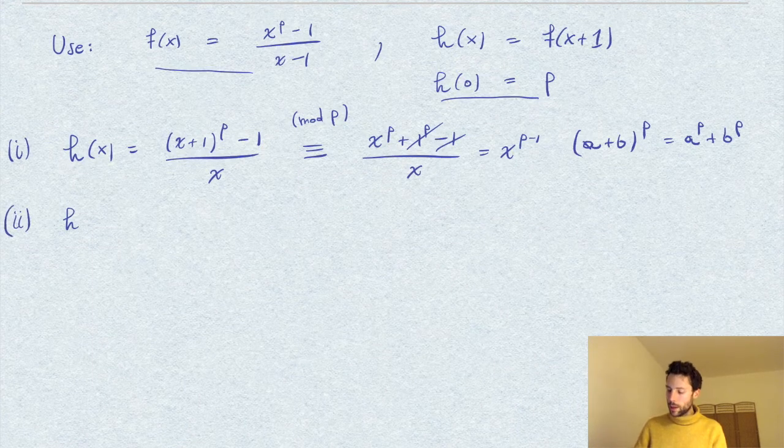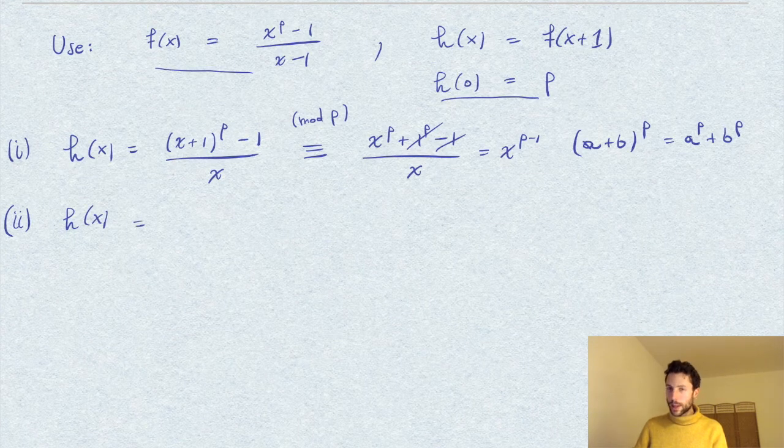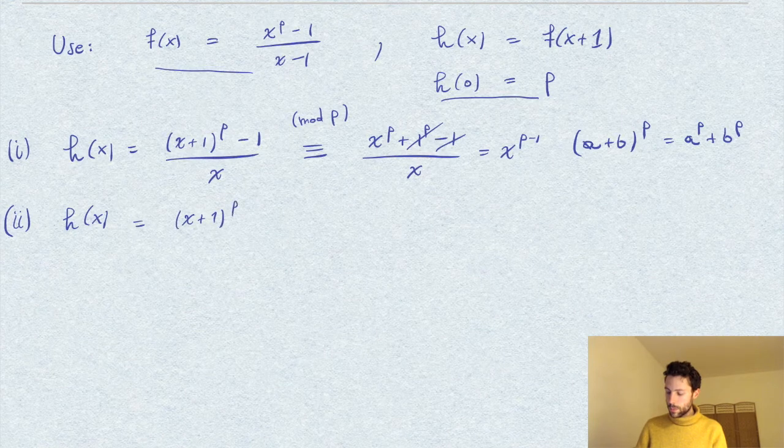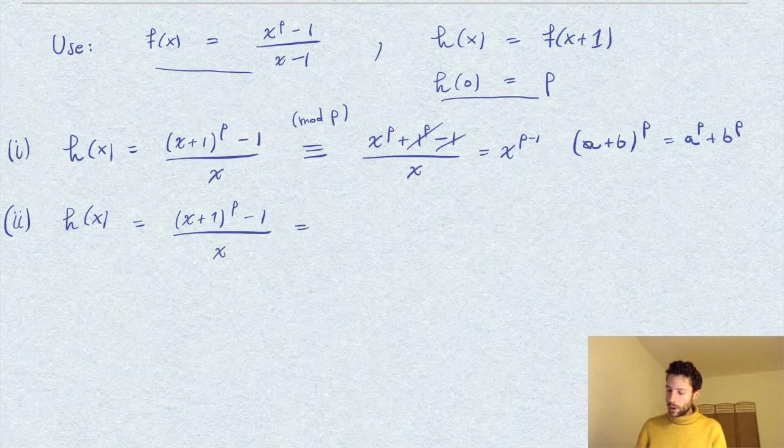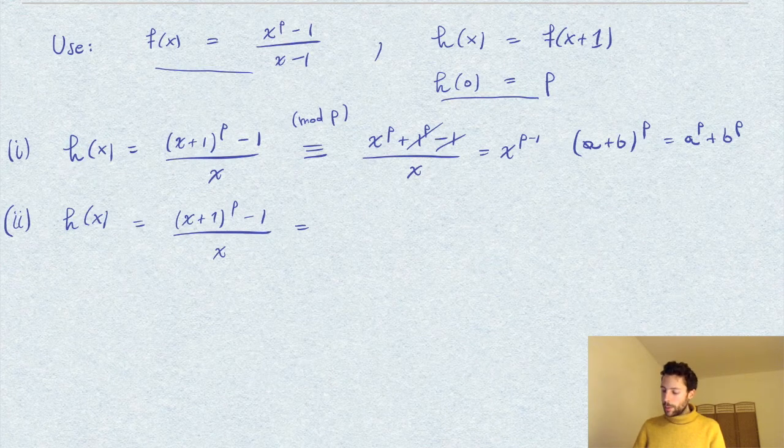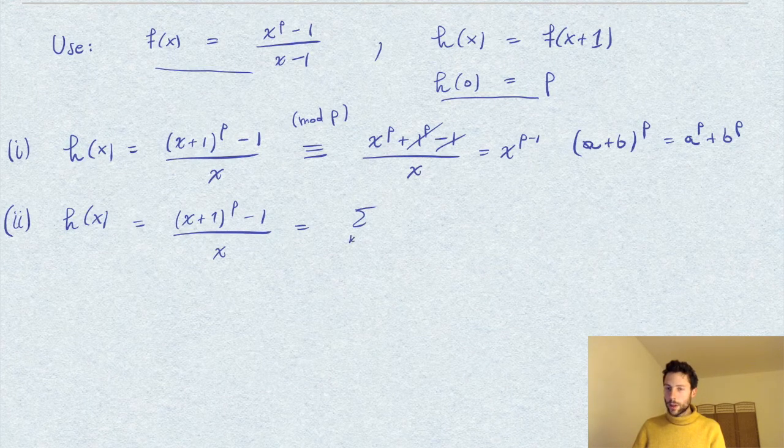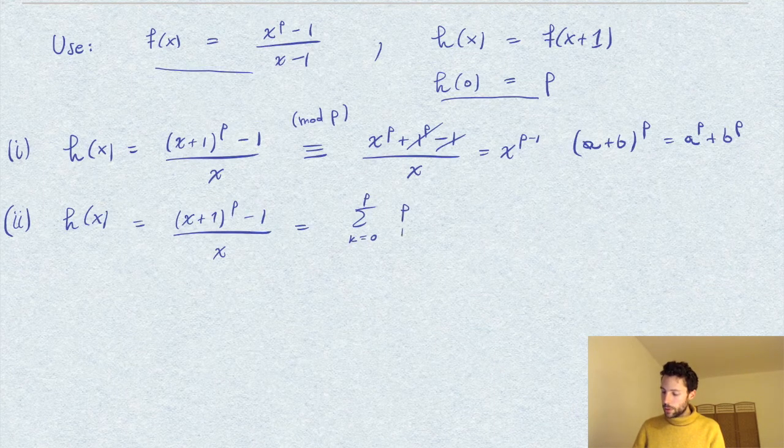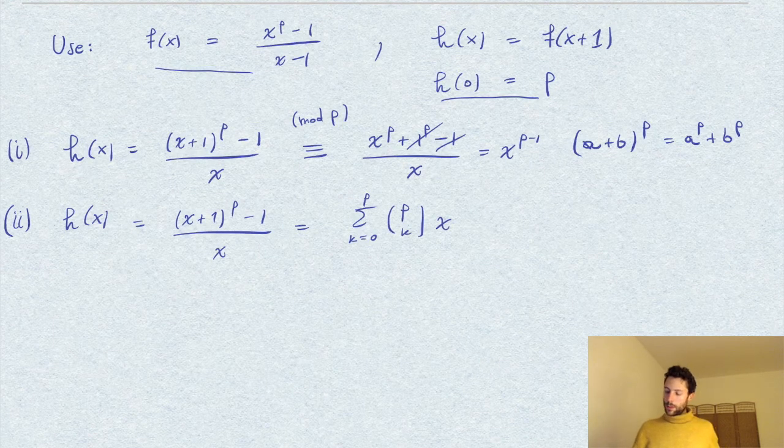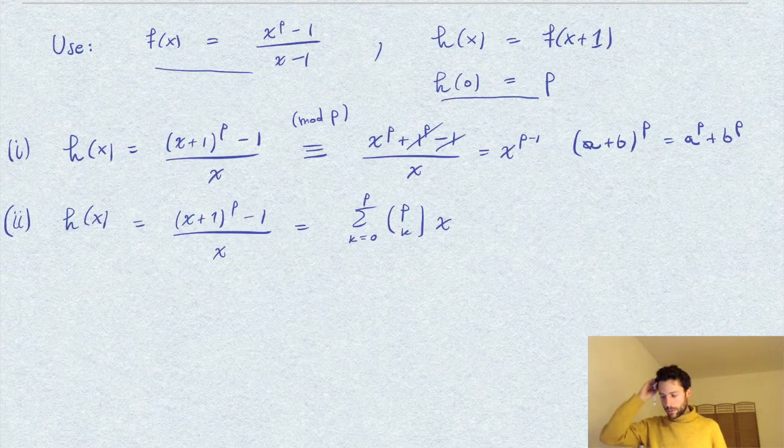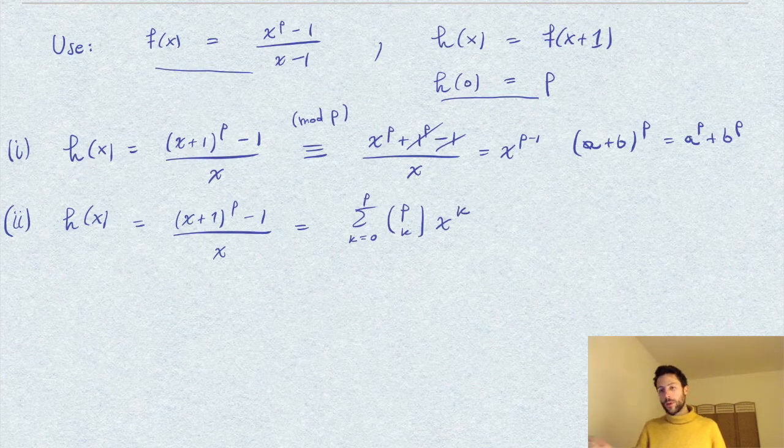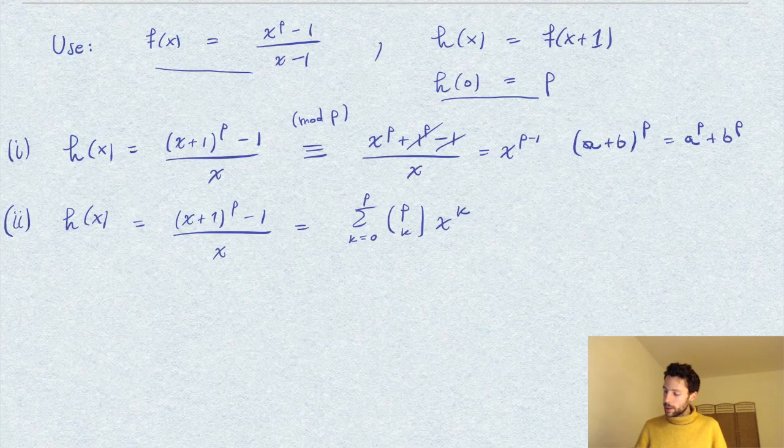Then h of x—we just expand the computation. Of course, I apply here the binomial theorem, and I can write this as the sum of k from 0 to p of the binomial coefficient p choose k times x to the power k minus 1 over x.